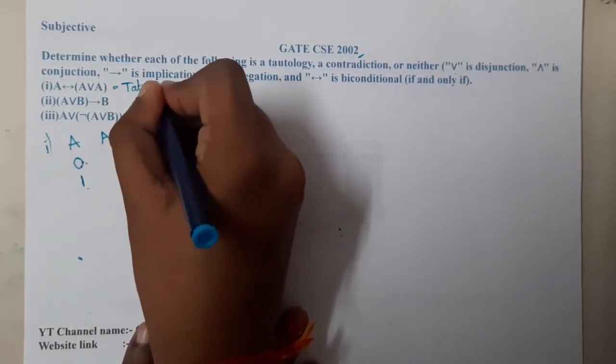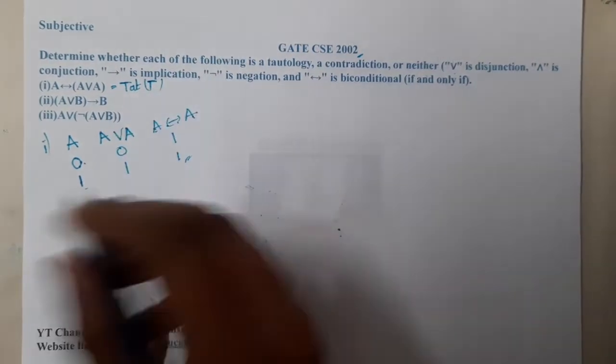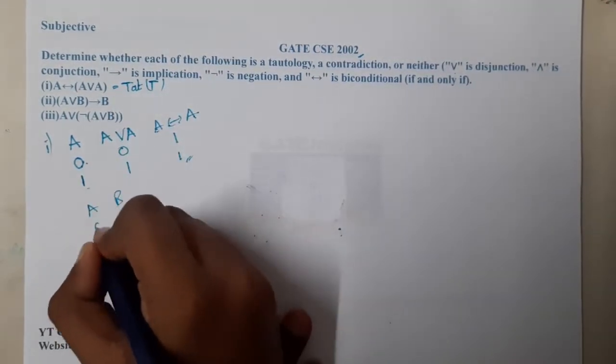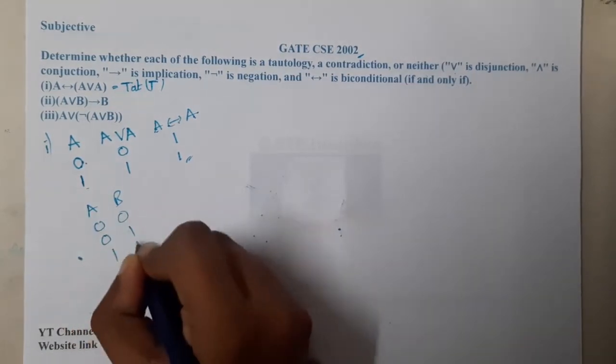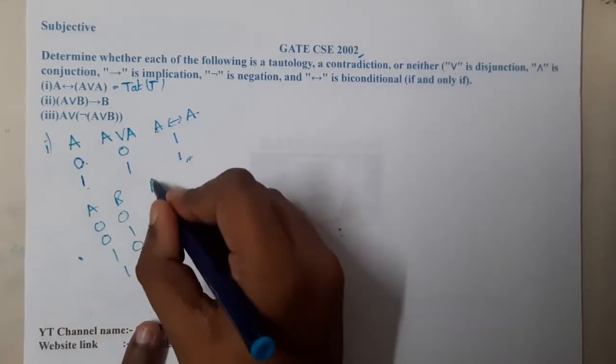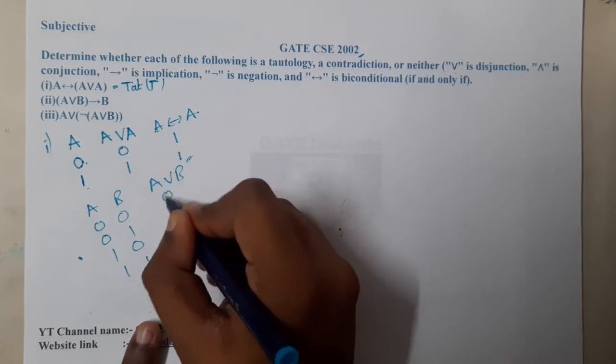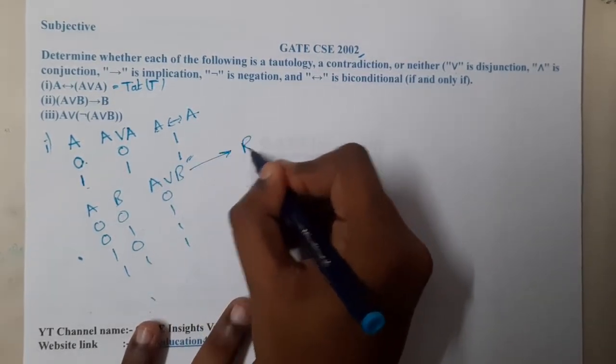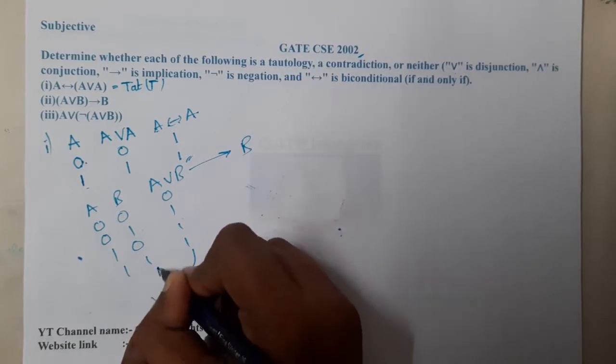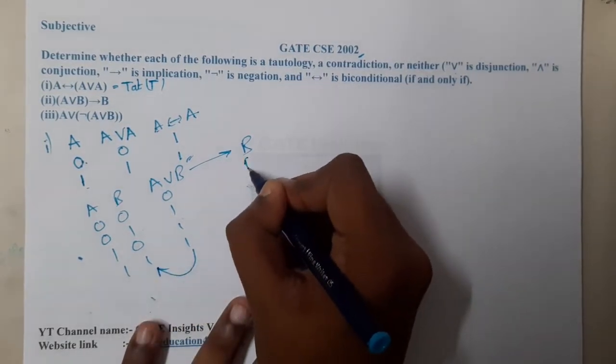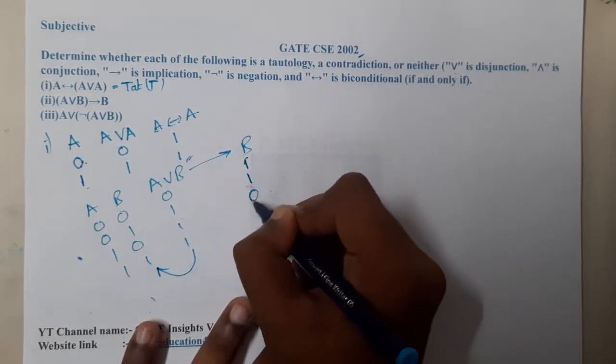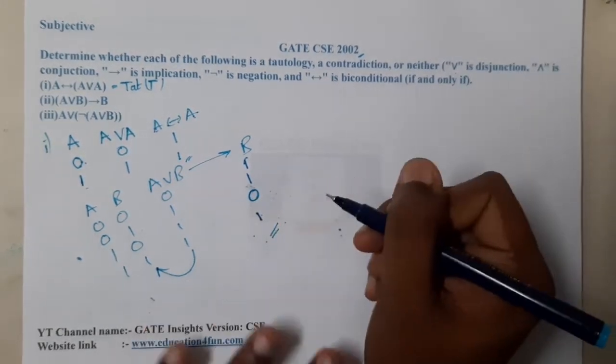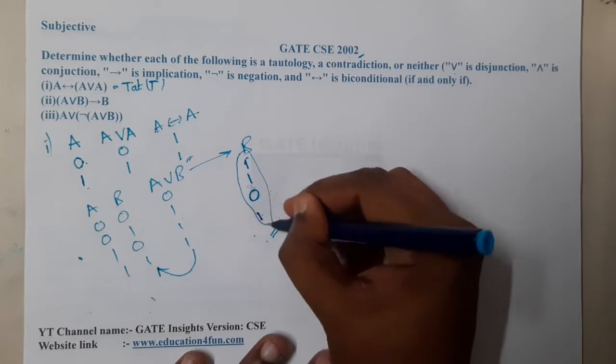Moving on to option two, that is A B combination: zero zero, zero one, one zero, one one. A or B, so it is zero one one one. Now we are calculating this implies B, so this implies B is one one zero and one. If you observe here carefully, we got a combination of zeros and ones.